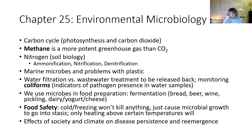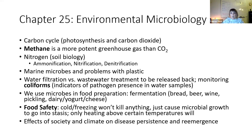Plants can use that glucose for energy or to build their cells. Then we can eat them, cycling that carbon into us as we consume sugars and other carbon-containing molecules. When we die, saprobes decompose us, cycling some of that carbon back. Ultimately, through aerobic respiration — whether by us or the saprobes — carbon dioxide is released back into the atmosphere, and that's how the cycle rotates back through.